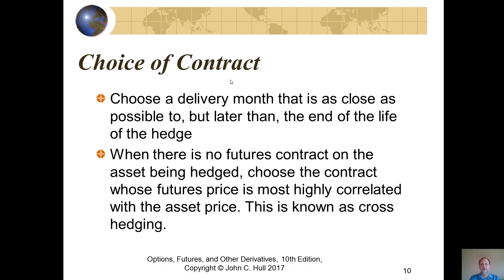You can't always get a contract on the exact product you want to buy, so you have to find one that is closely correlated. If you want to hedge on the US dollar versus the Polish Zloty, there probably isn't a very liquid contract on the Polish Zloty, but it trades well correlated with the Euro, so you might hedge on the dollar versus the Euro. Choose a delivery month as close as possible to but later than the end of life of the hedge. When there is no futures contract on the asset being hedged, choose the contract whose futures price is most highly correlated with the asset — this is known as a cross hedge.